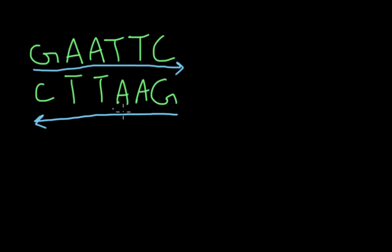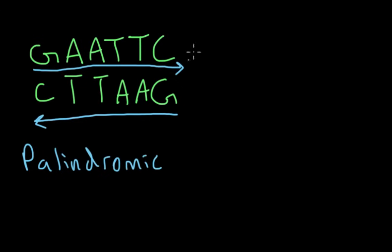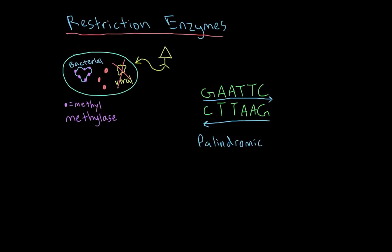This is known as a palindromic sequence. A palindromic sequence is exactly what restriction enzymes recognize. Let's give one restriction enzyme a name: ECO-R1. ECO-R1 is actually able to recognize this palindromic sequence. As ECO-R1 is floating around the bacterial cell, it'll recognize this sequence, and if it's methylated it won't touch it, but if it's unmethylated — as in the viral DNA — it will actually cleave it.